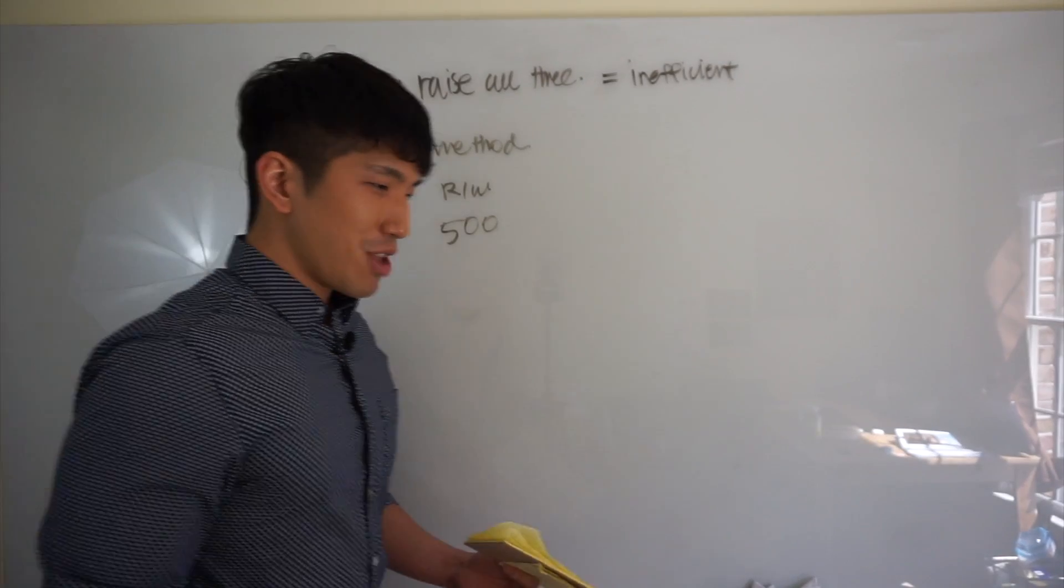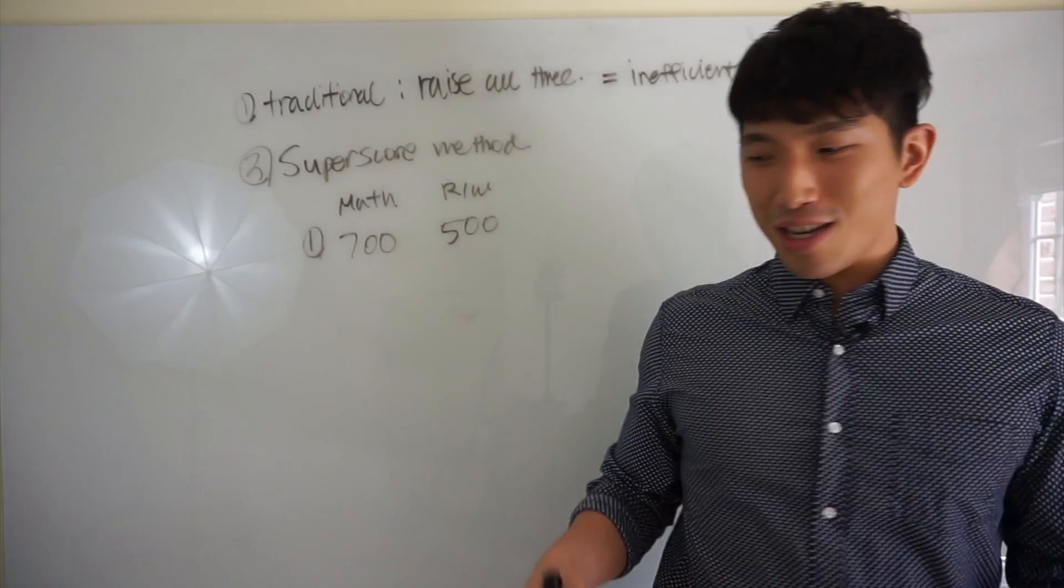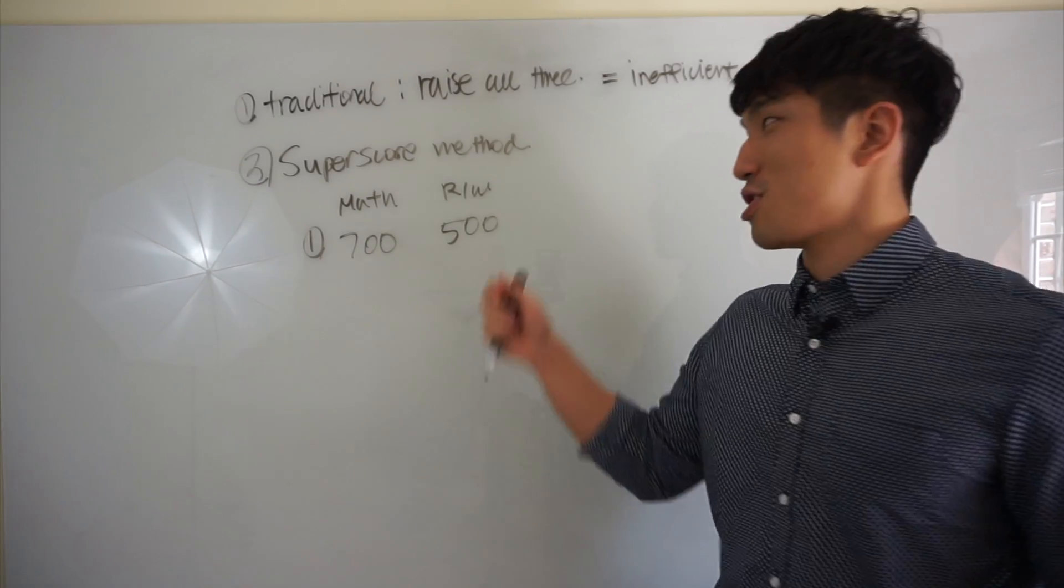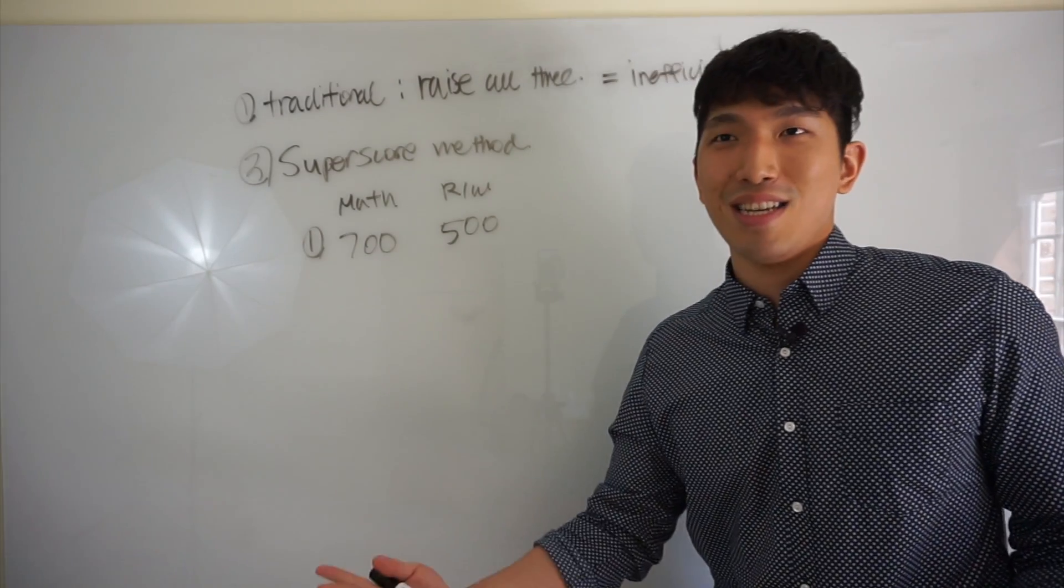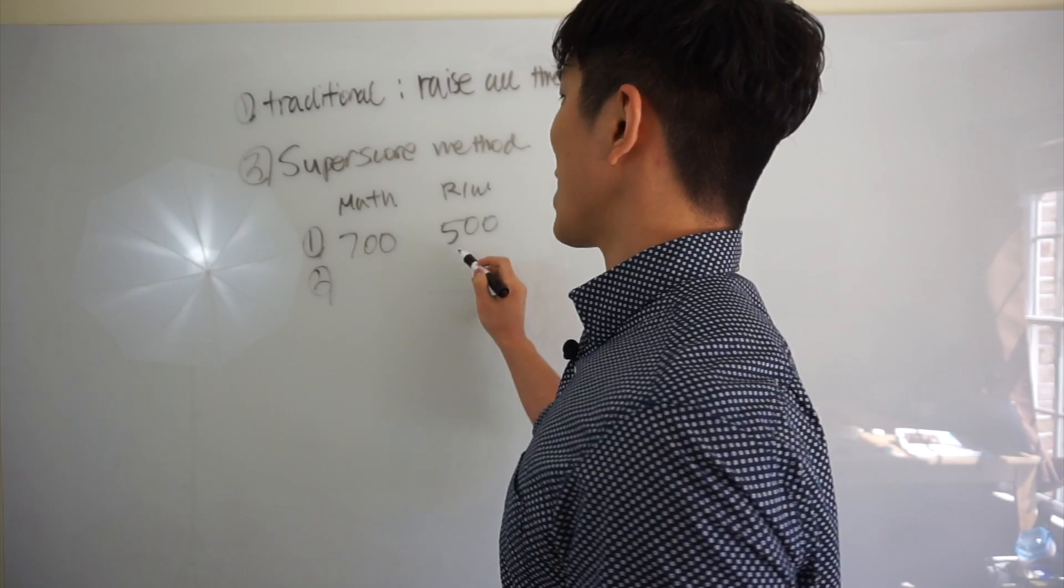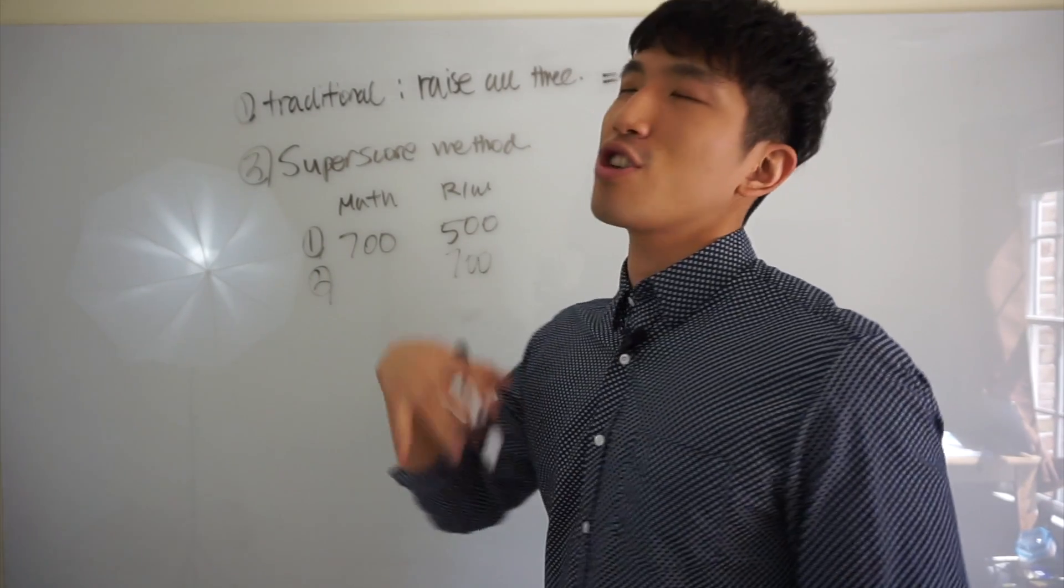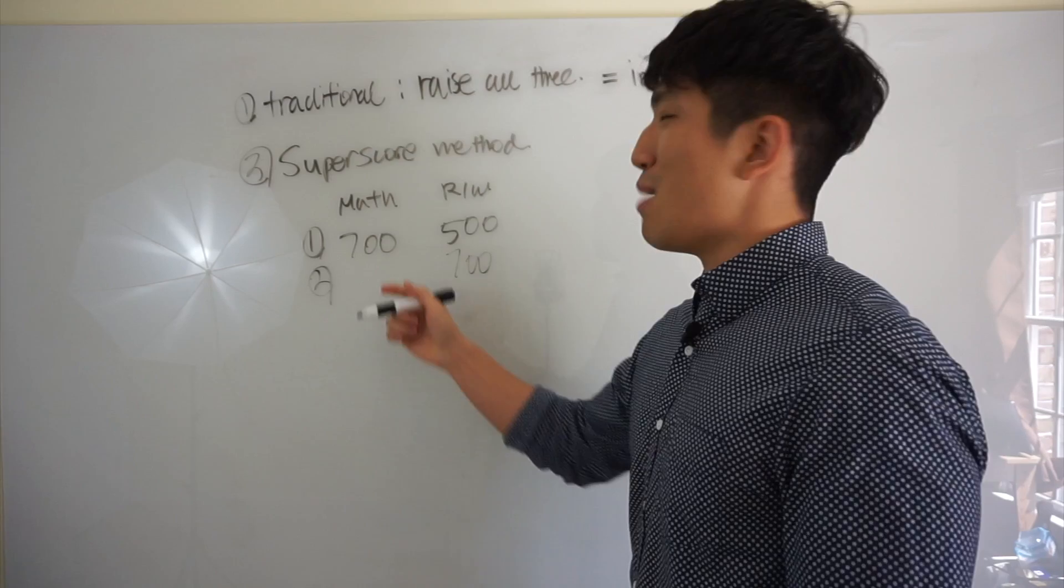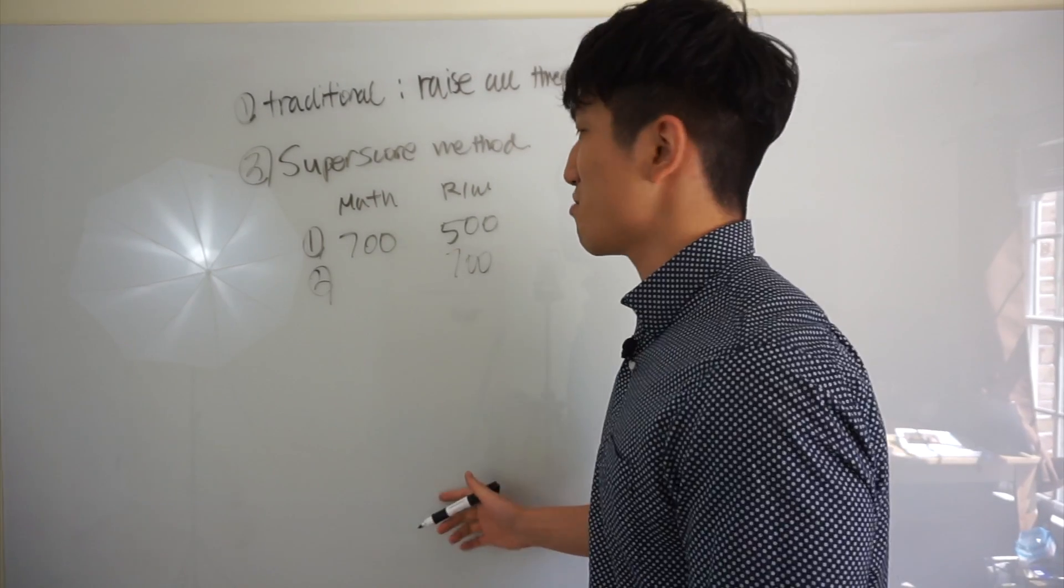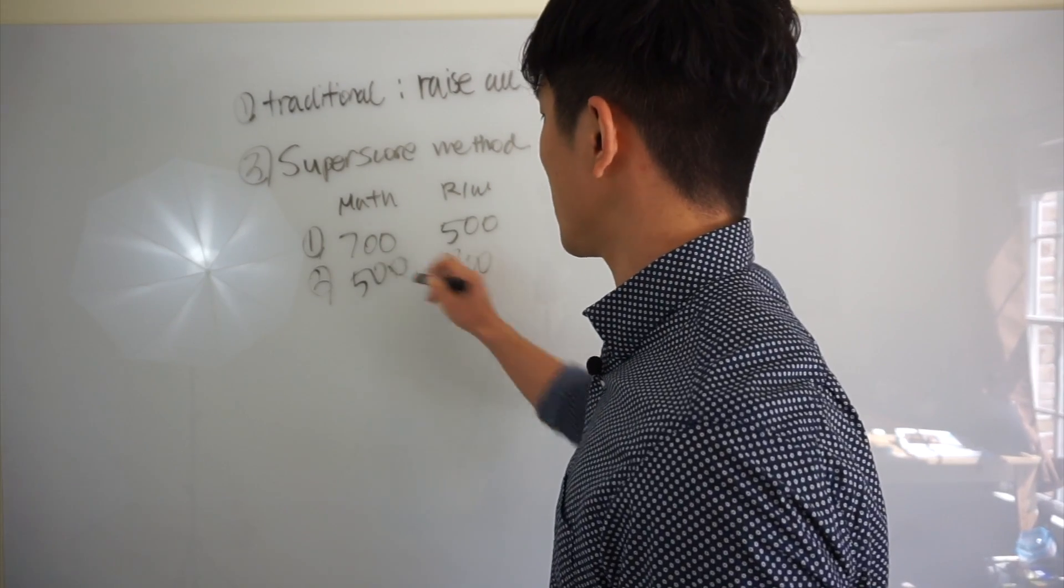And the second time you take it, you're really traumatized by the low score that you got, 500. So what happens is you're going to study reading and writing a lot and you're going to try to take it again. So second time you take it, what's going to happen is that your reading and writing score goes up to 700 because you study so much for it. But math score, you didn't really study at all. You forgot a couple of things and you just got 500.